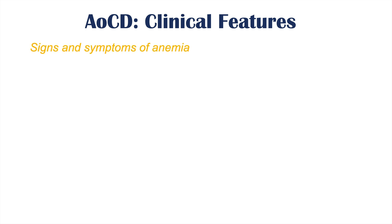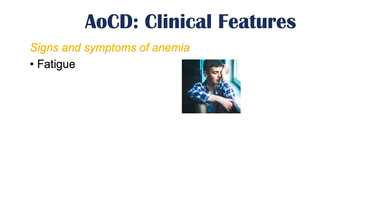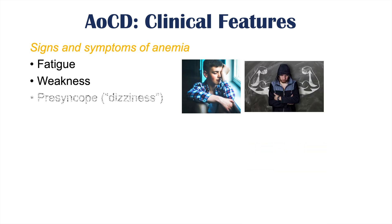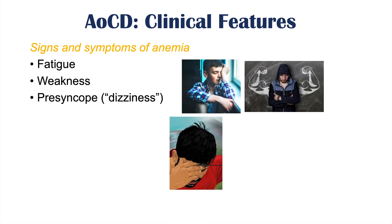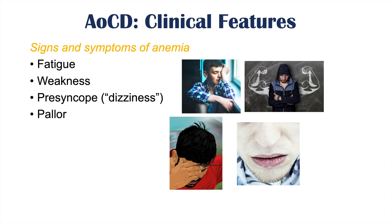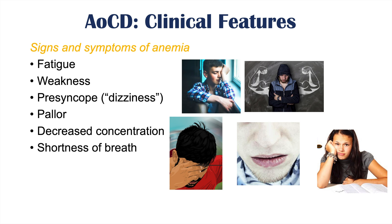Anemia of chronic disease has signs and symptoms like any other type of anemia. There will be fatigue and weakness due to decreased oxygen delivery to cells and tissues. Patients may also experience presyncope — a feeling of dizziness or lightheadedness — as well as pallor, where the skin becomes more pale in tone, and decreased concentration. Shortness of breath can occur in some patients, and in more severe cases, chest pain or angina. However, anemia of chronic disease is often mild, so shortness of breath and chest pain may not always be present.